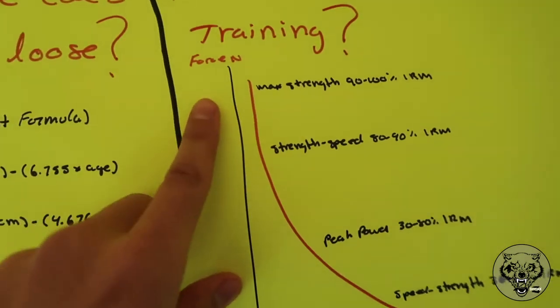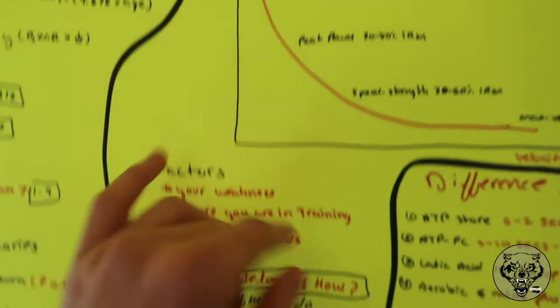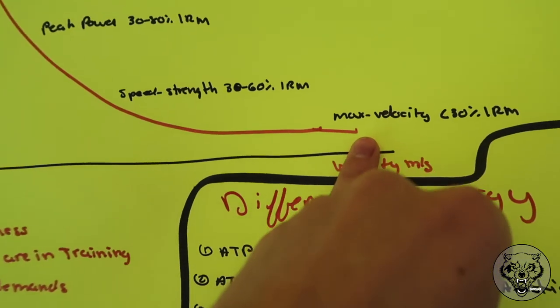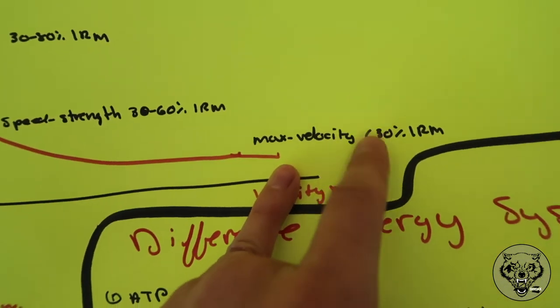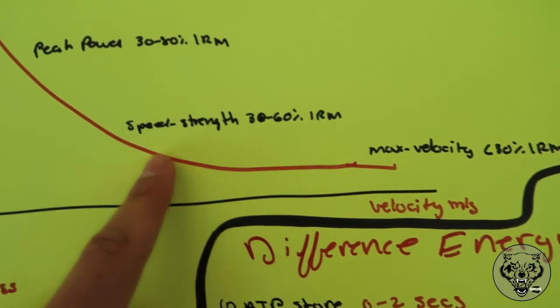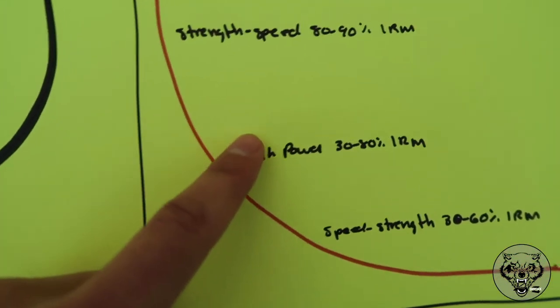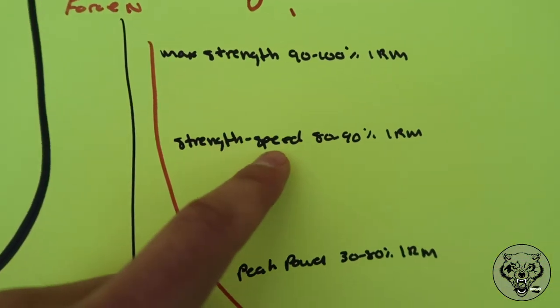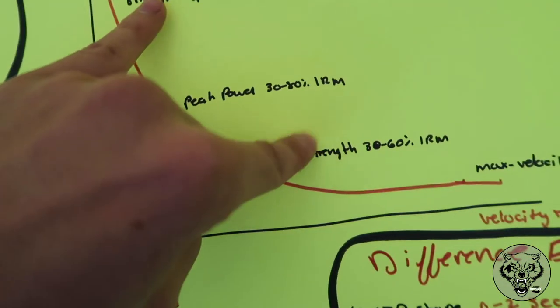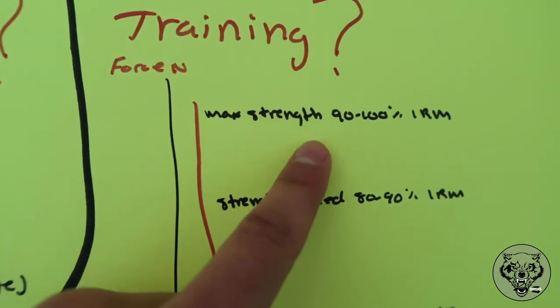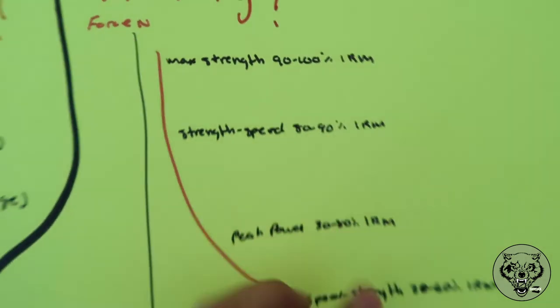The first thing we're talking about is called the speed-strength curve. On the left side we have force on the Y-axis, and on the X-axis we have velocity. At the lower end of velocity we have max velocity at under 30% of your 1RM. Going up we have speed-strength at 30 to 60%, then peak power at 30 to 80%, then strength-speed at 80 to 90%, and at max force we have strength at 90 to 100% 1RM.